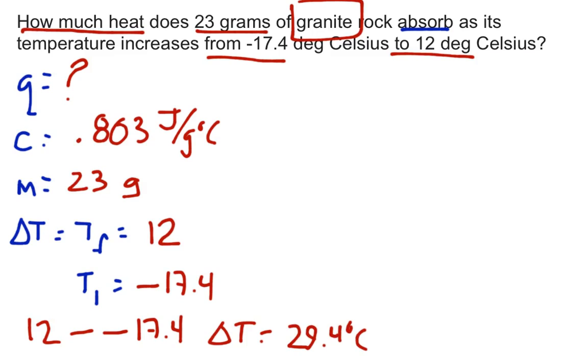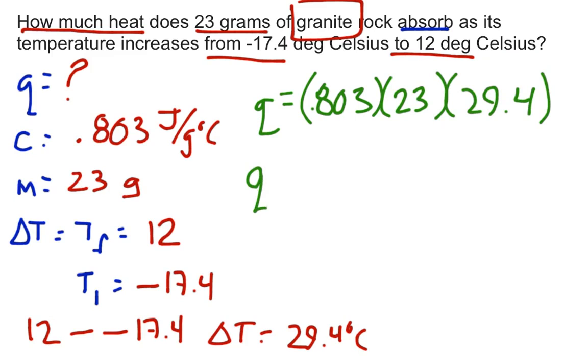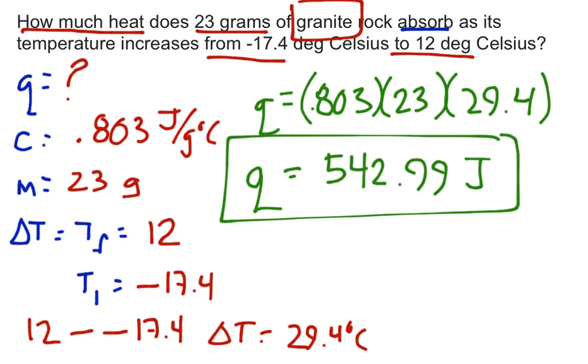Now it's simply a matter of crunching your numbers together. Q equals 0.803 times 23 times 29.4. When you multiply these values together, you find Q equals 542.99 joules. The granite must absorb 542.99 joules of heat energy to increase its temperature that much.